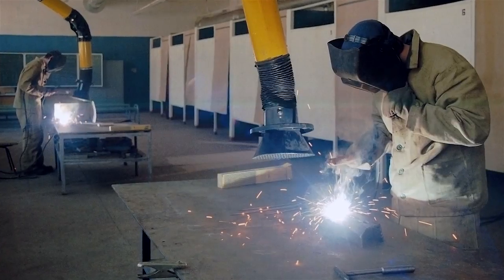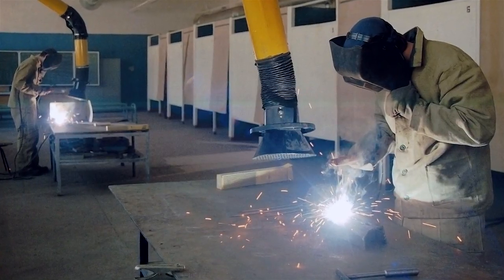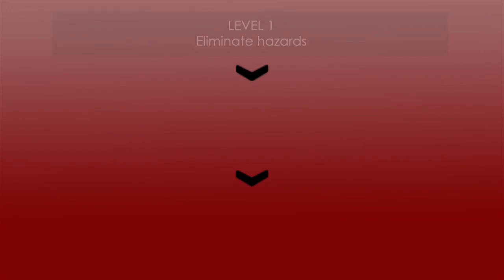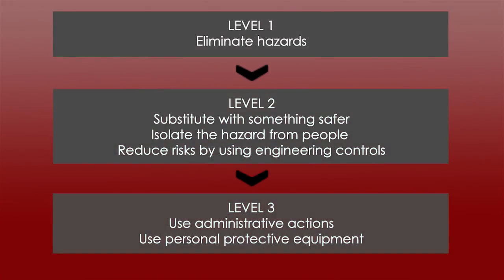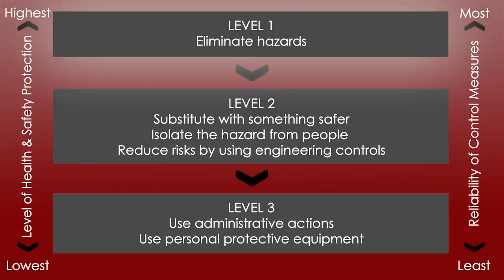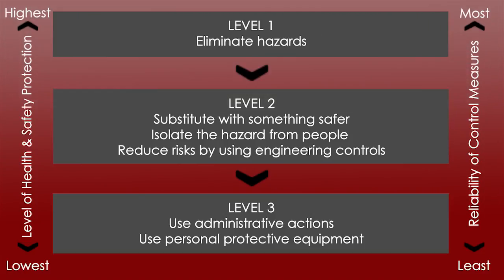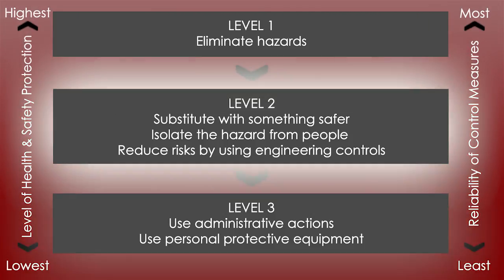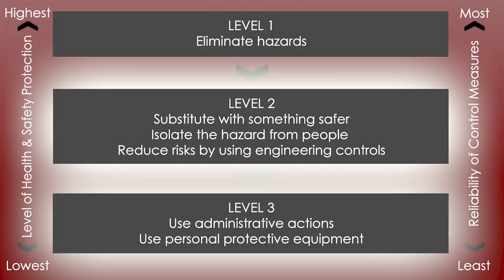Businesses are required to minimise risks to health and safety by applying the hierarchy of controls. This is a ranking of control measures used to protect workers from risks to health and safety. We need to choose controls based on this ranking and whether they are practical for the job or task. In practice, using a combination of controls often brings the best results.